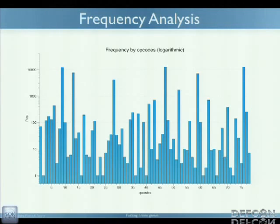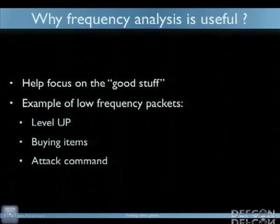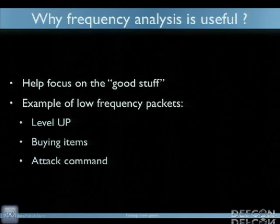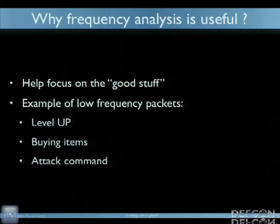You can start with frequency analysis. Here's a plot — by opcode, on a logarithmic scale, so the biggest bars are actually way higher than they look on the diagram. Some opcodes are very, very frequent — mainly pings and location updates, which are not really what you're interested in. On the other hand, there's a handful of opcodes which are very, very rare, and these are the ones you actually care about. Why? Because the rare stuff is usually the good stuff. For instance, when you do a level up, that's not that often — maybe four or five times in a trace. Same for buying items — maybe 10 or 20. And attacking doesn't produce that many packets either. So if you discard all the very frequently updated stuff, you end up with a small chunk of opcodes that are more manageable.